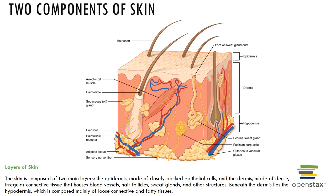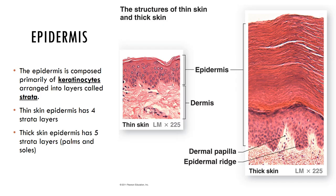There are two main layers of the skin: the epidermis and the dermis. The epidermis is the superficial region and the dermis is the middle region. The epidermis is composed of keratinized stratified squamous epithelium.